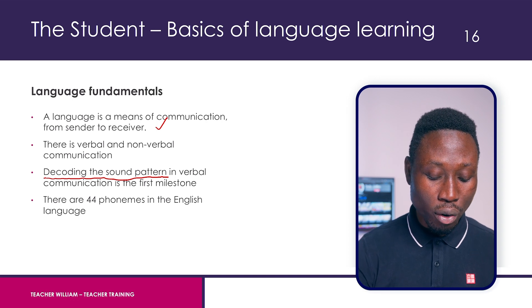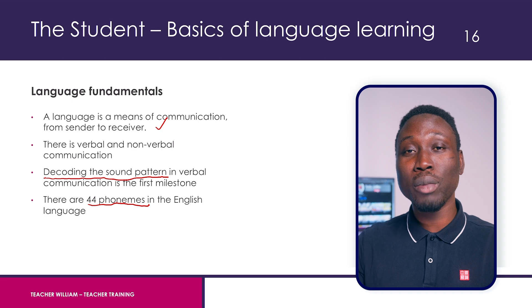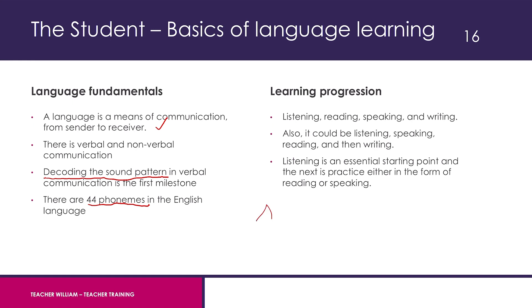There are about 44 phonemes in English — a phoneme being the fundamental unit of a sound, like k, d, or e. Although there are 26 characters in the alphabet, English has 44 phonemes because many vowels have two sounds: a short sound and a long sound. There are also digraphs like OO, EE, and CH, which are all sounds associated with the English language.